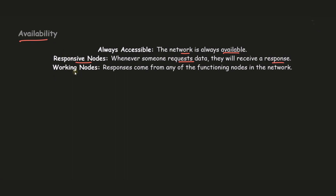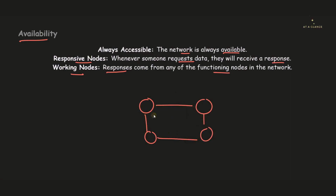Availability also ensures that nodes are working. Responses will only come from functioning nodes — there might be dead or corrupted nodes which cannot provide the requested information. But this doesn't mean the request should not be broadcasted; it has to be broadcasted to every single node, and whichever node is functioning should return the response to the user. For example, in a four-node system, if a user requests data from a corrupted node, that request should not result in a bad response.